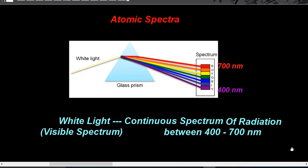To understand about the atomic spectra we must know the basic concept of light, as atomic spectra is produced by the interaction of light and matter. Light is an electromagnetic radiation, and the electromagnetic spectrum from this radiation consists of a region known as the visible region, or white light. The white light is that continuous part of the electromagnetic spectrum which lies within the wavelength range of 400 nanometers to 700 nanometers.